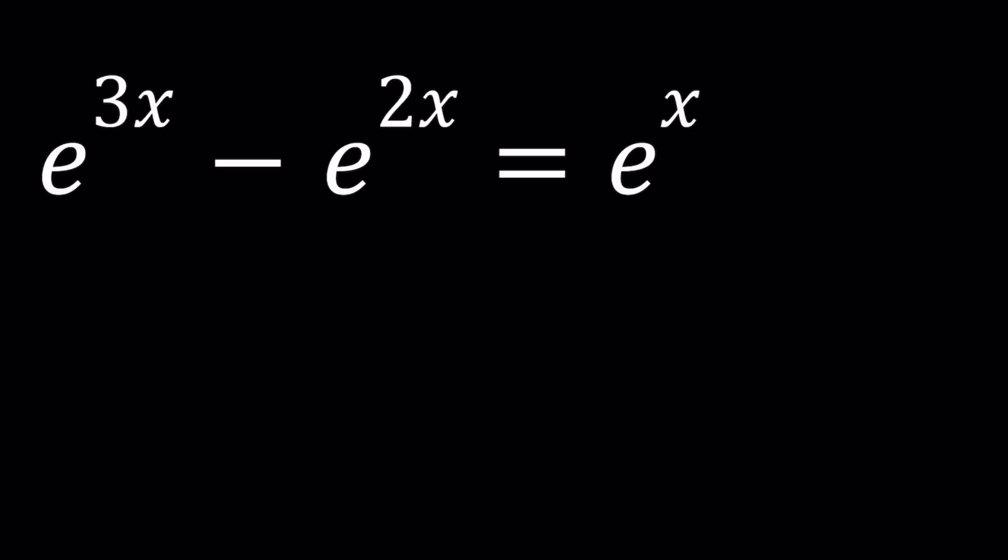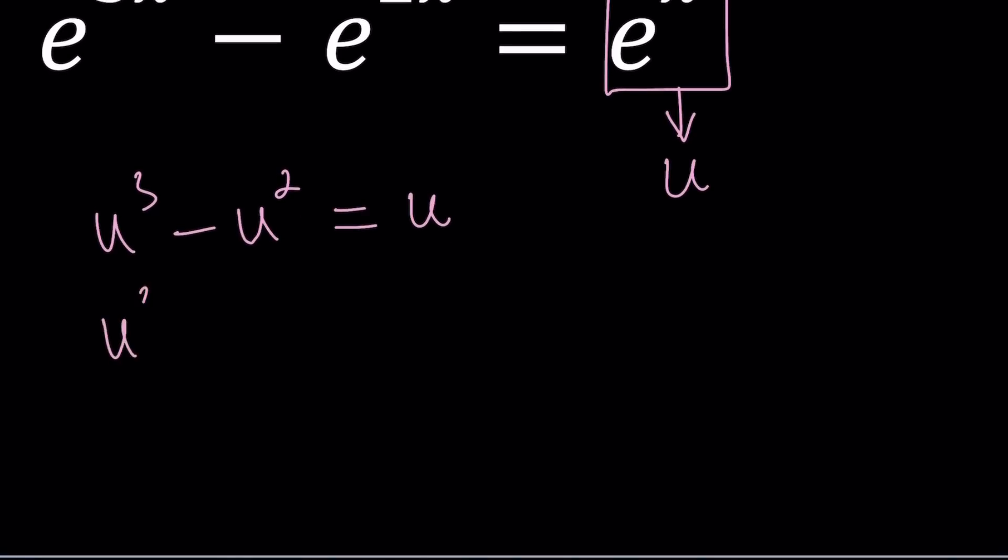So what can I sub? I can go ahead and replace E to the power X with something. How about setting E to the power X equal to U? We haven't used U for a while, so let's go ahead and do it. This is going to become U cubed minus U squared equals U. Let's put everything on the same side. By the way, I'm going to show you a graph at the end, which is actually really cool.